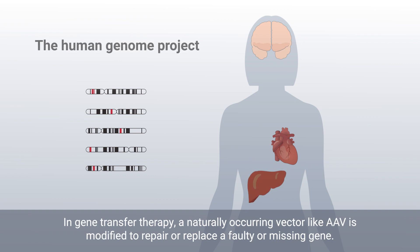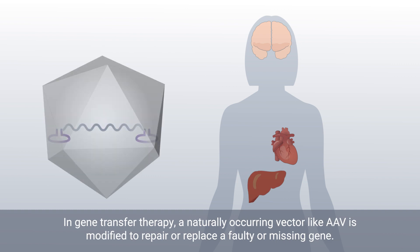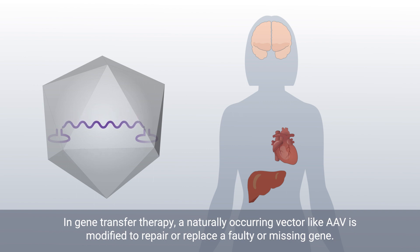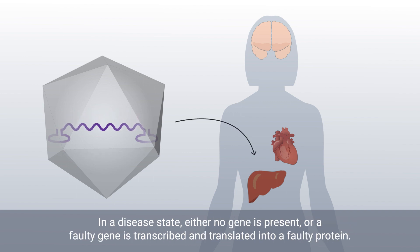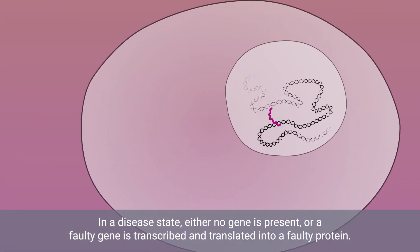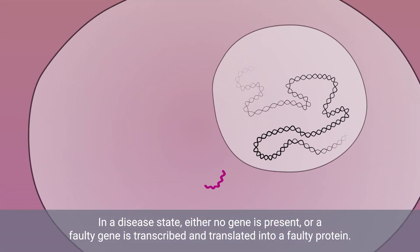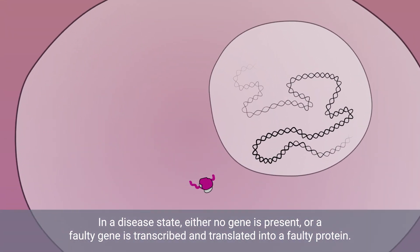In gene transfer therapy, a naturally occurring vector like AAV is modified to repair or replace a faulty or missing gene. In a disease state, either no gene is present or a faulty gene is transcribed and translated into a faulty protein.